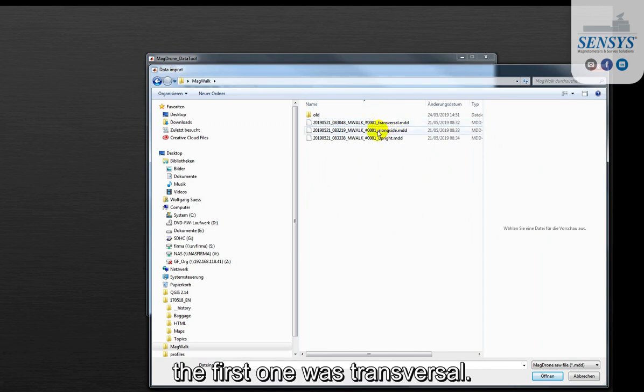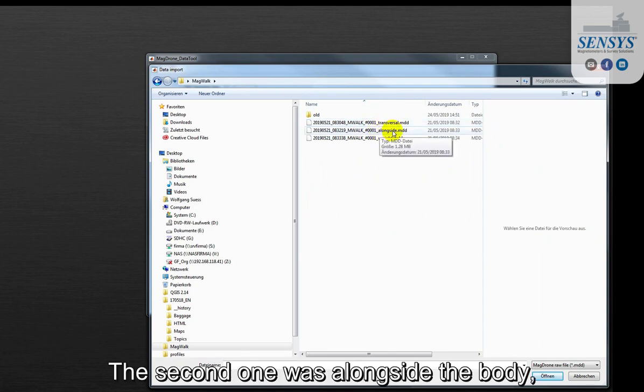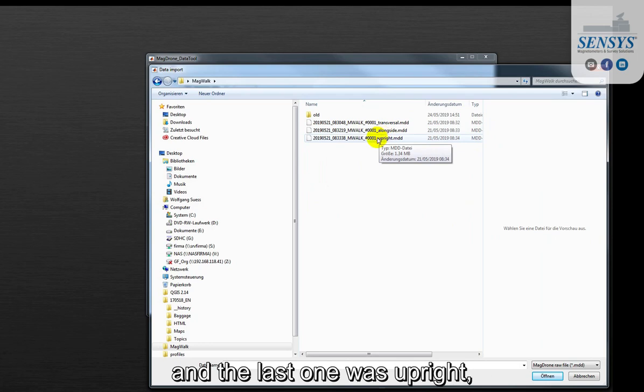The first one was transversal, the second one was alongside the body and the last one was upright using it as a Z gradiometer.